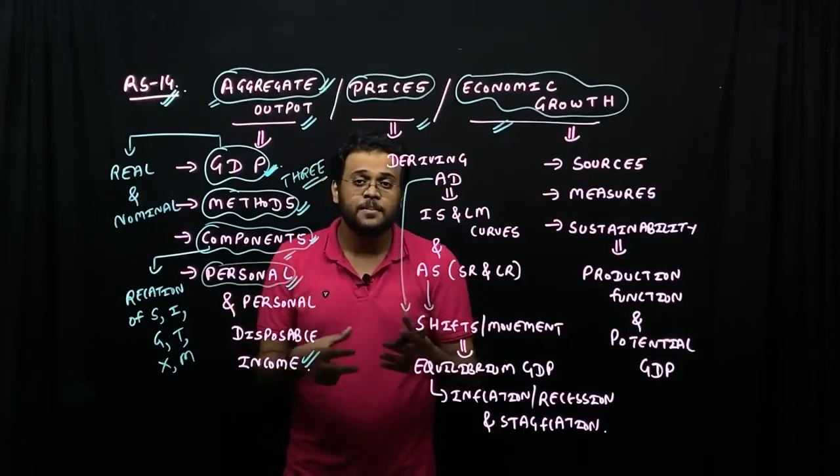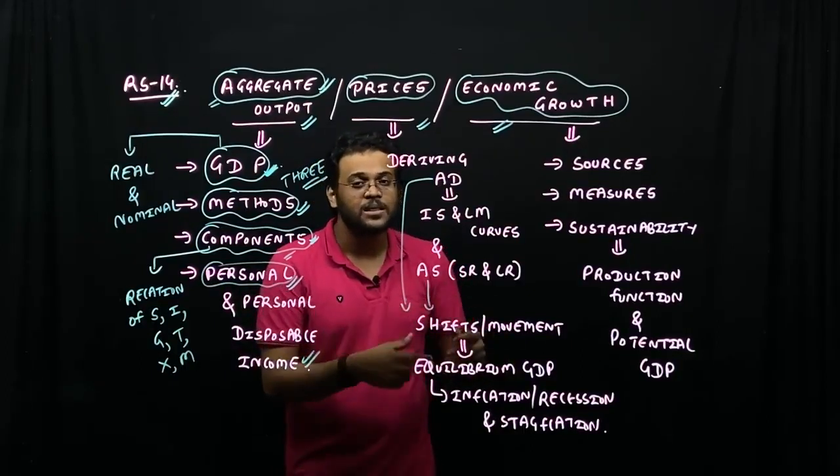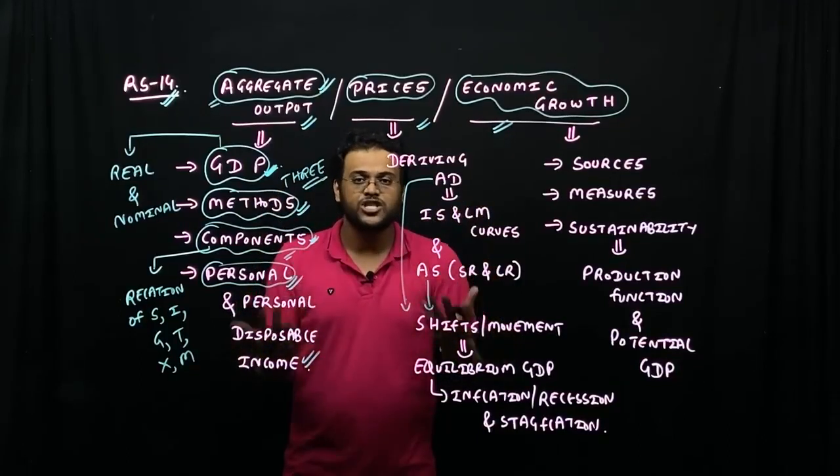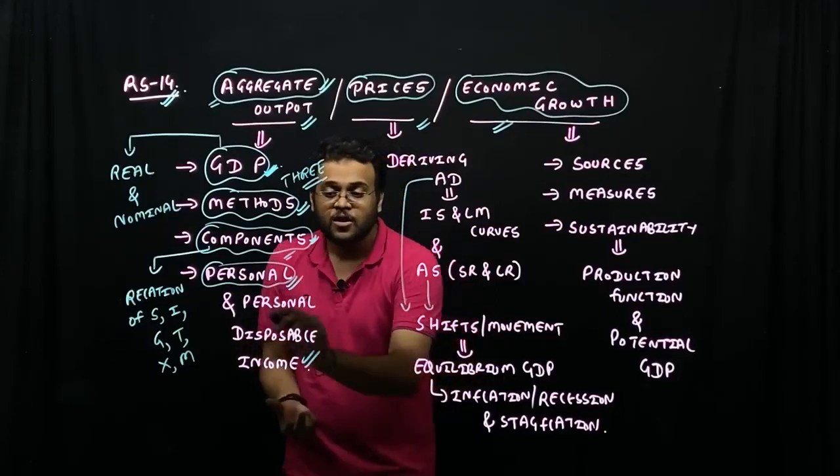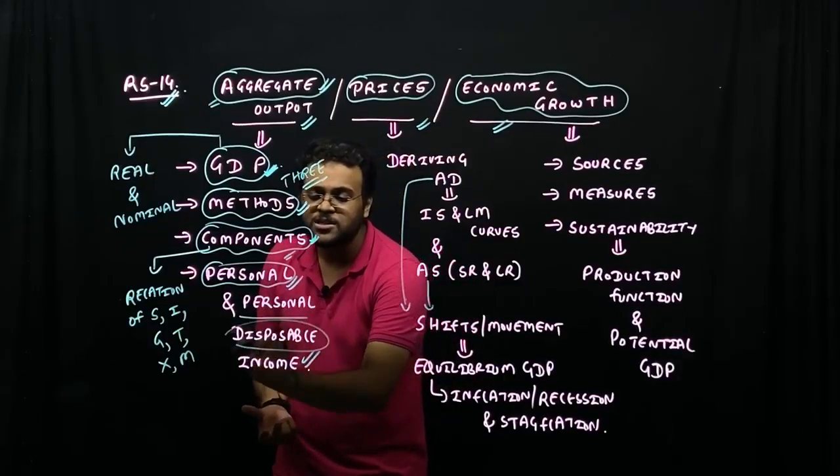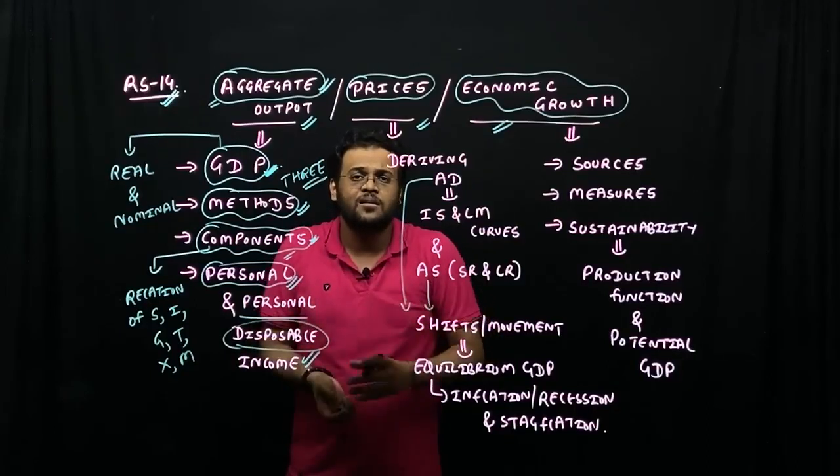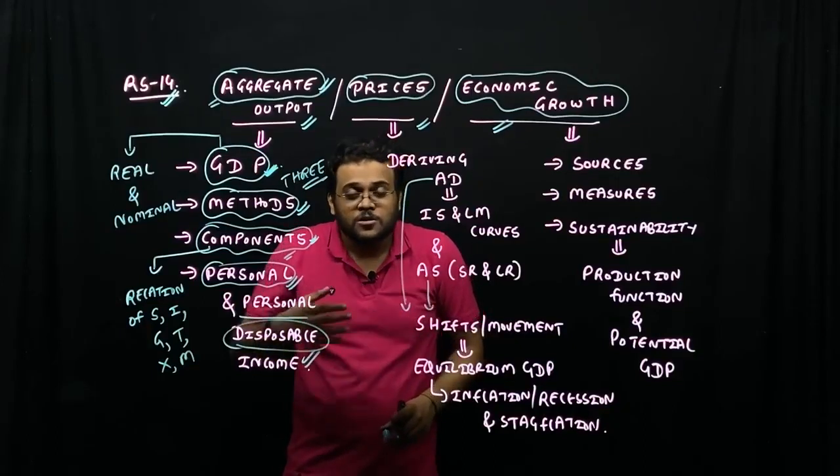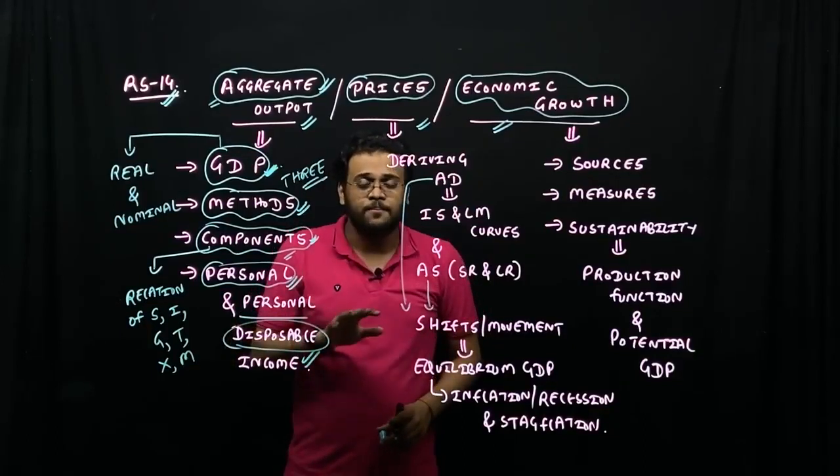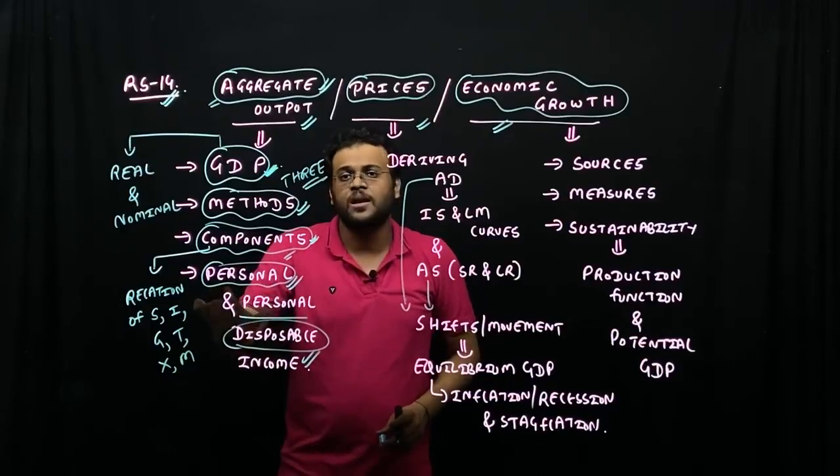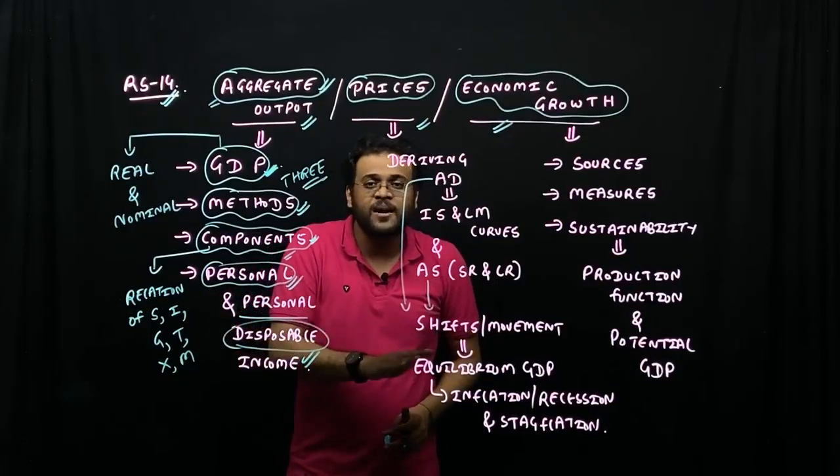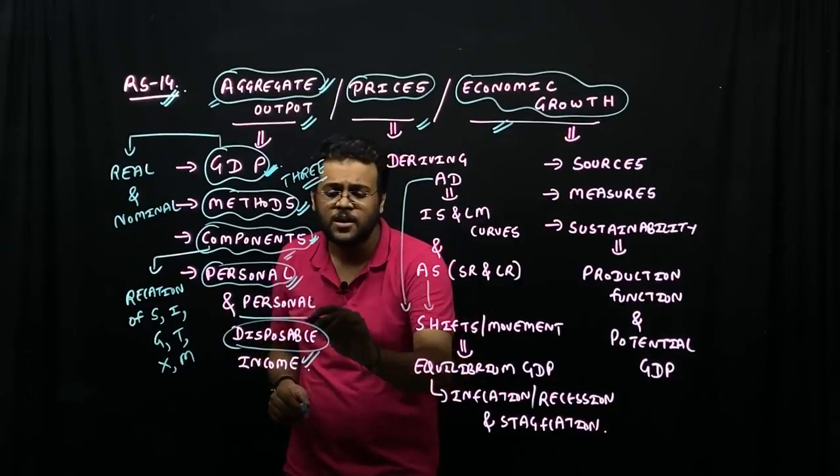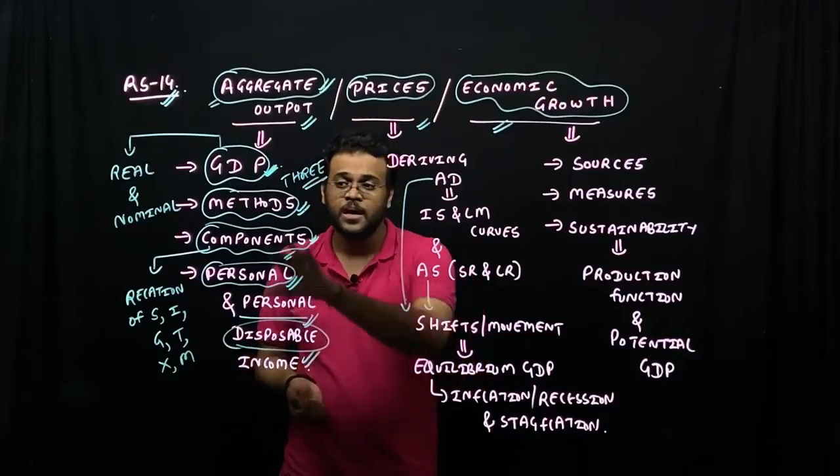It is personal income. Then the income when you pay the taxes to the government, you'll be getting it as personal disposable income. So basically, national income is factor income sum total. Household income is factor income plus transfers, which is personal income. And personal income minus taxes is personal disposable income.